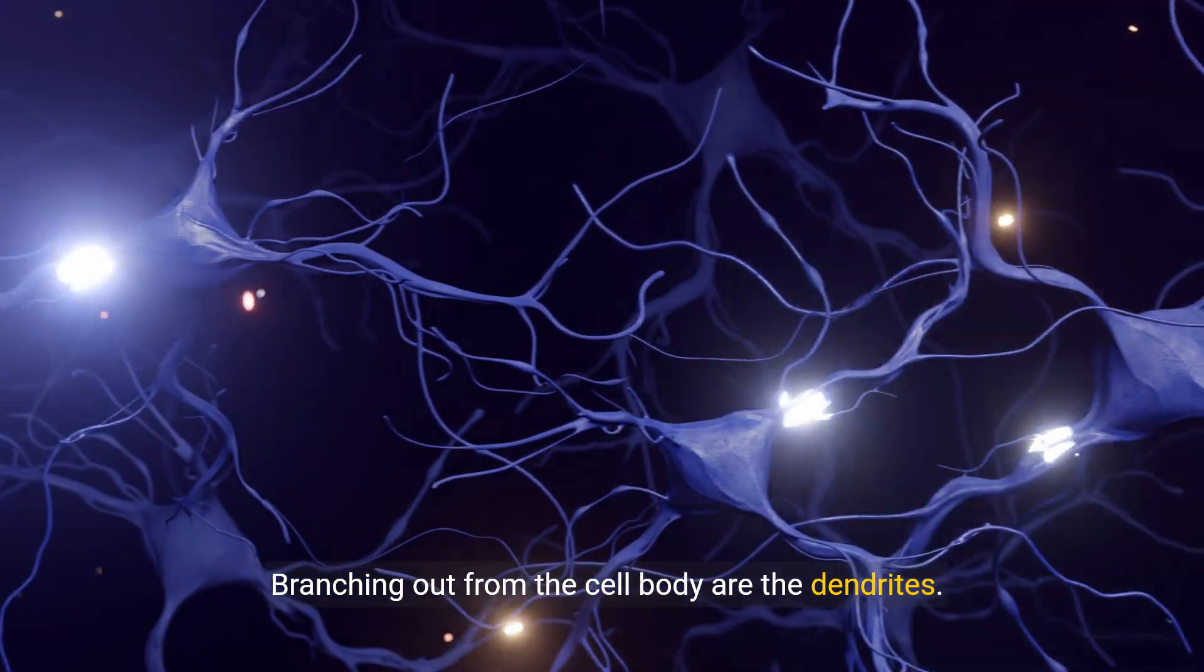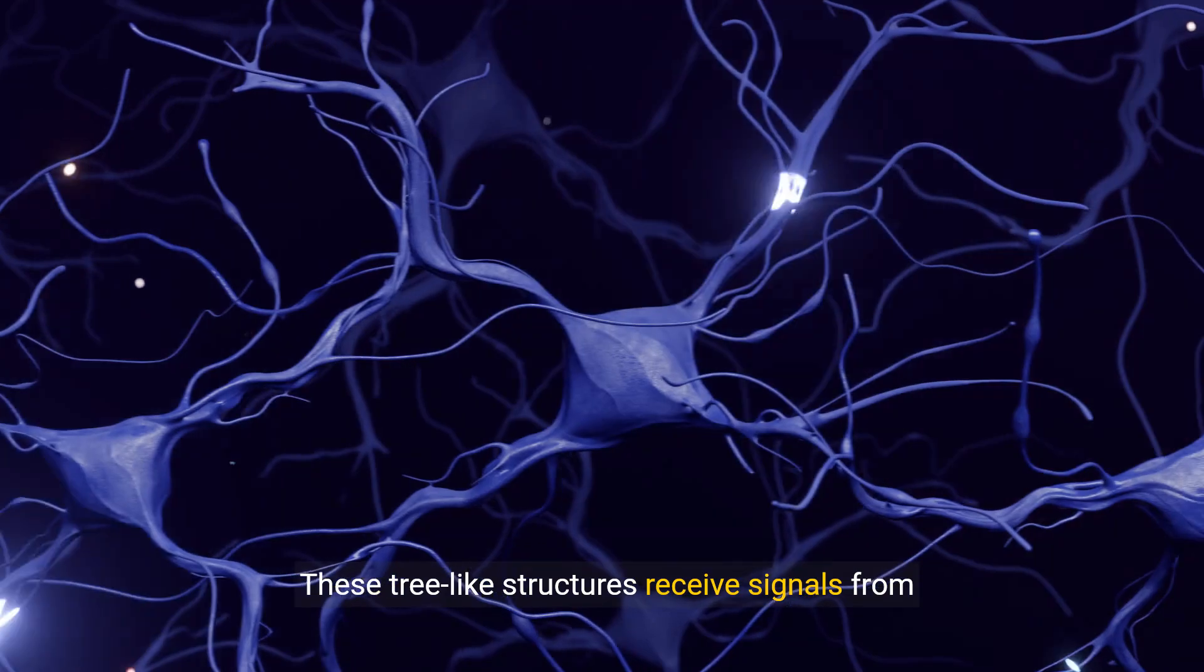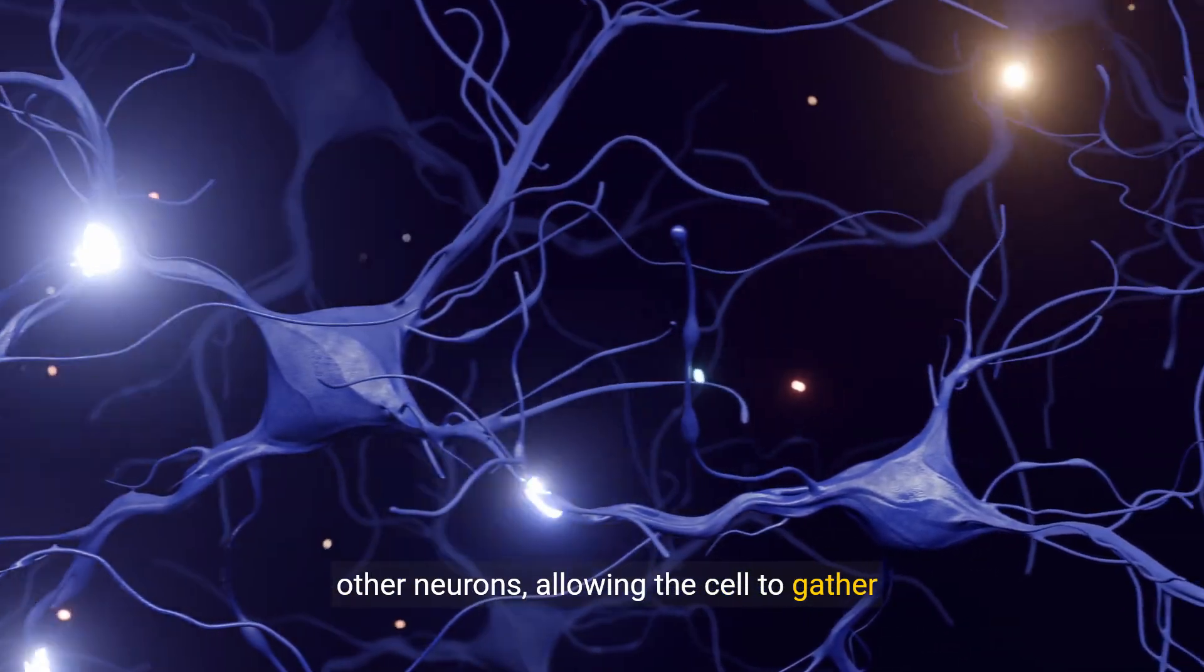Branching out from the cell body are the dendrites. These tree-like structures receive signals from other neurons, allowing the cell to gather information.